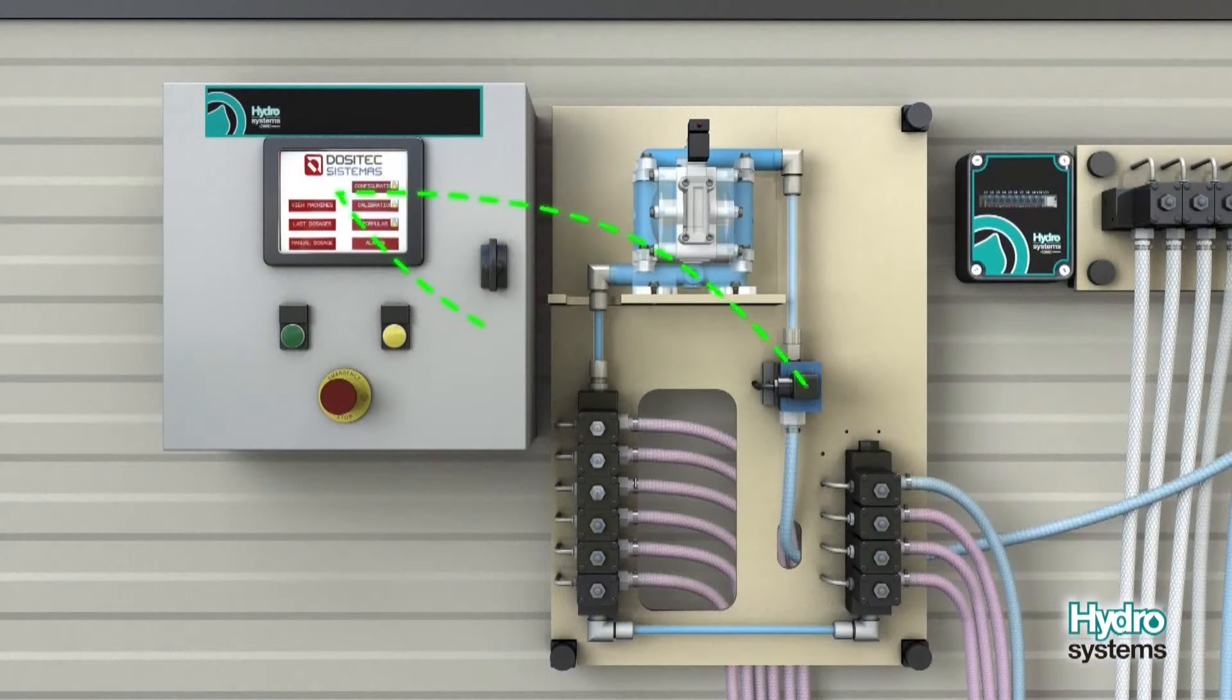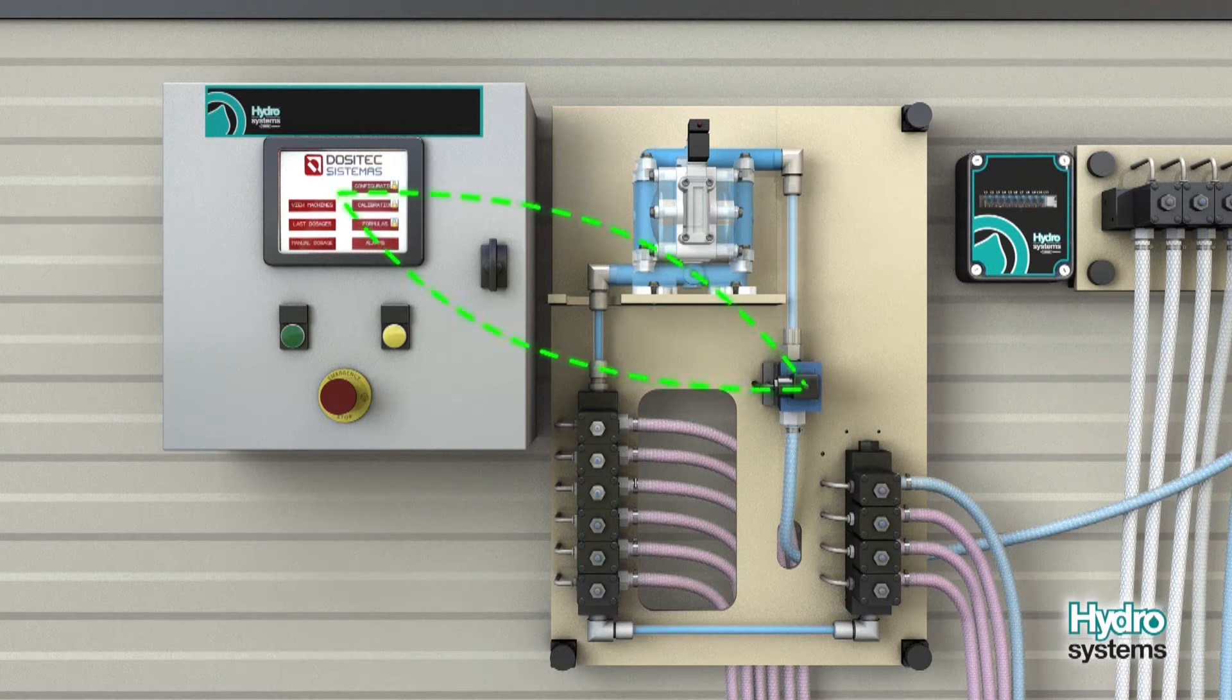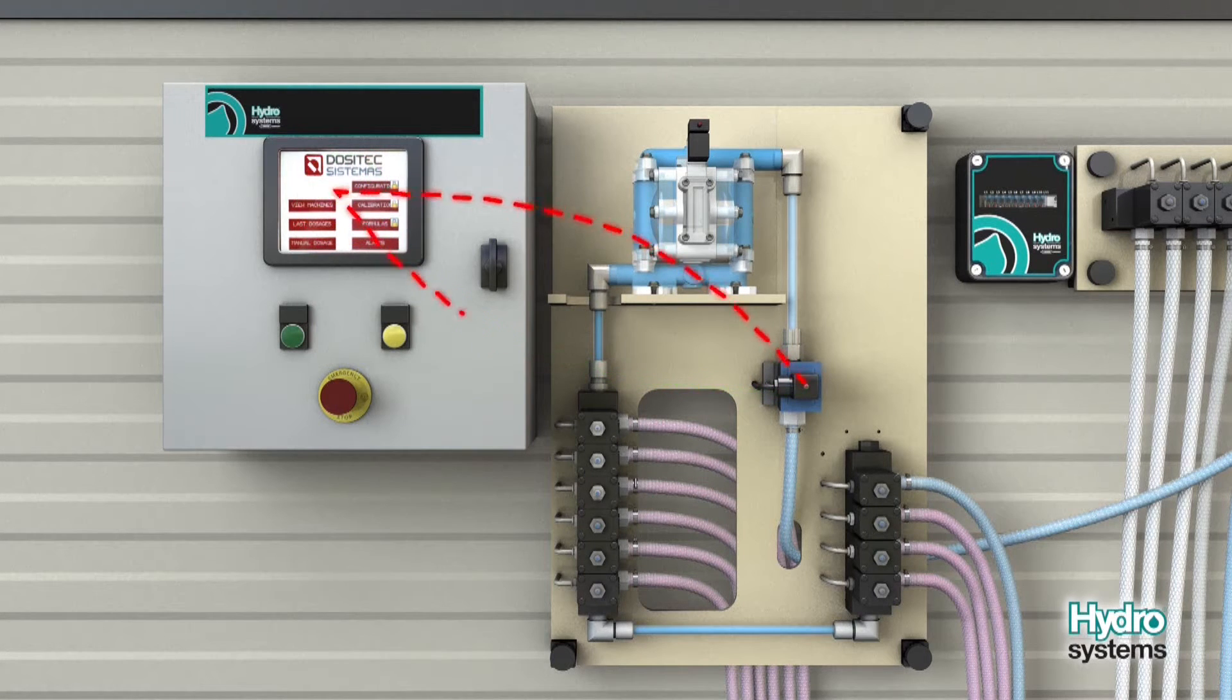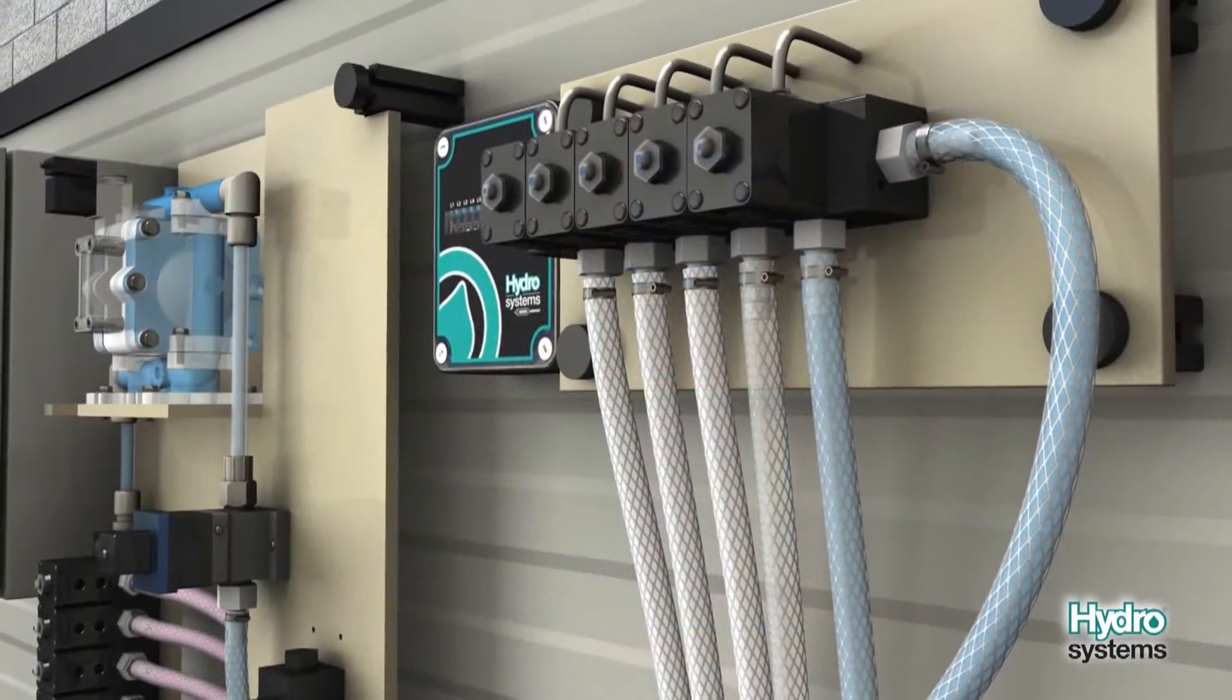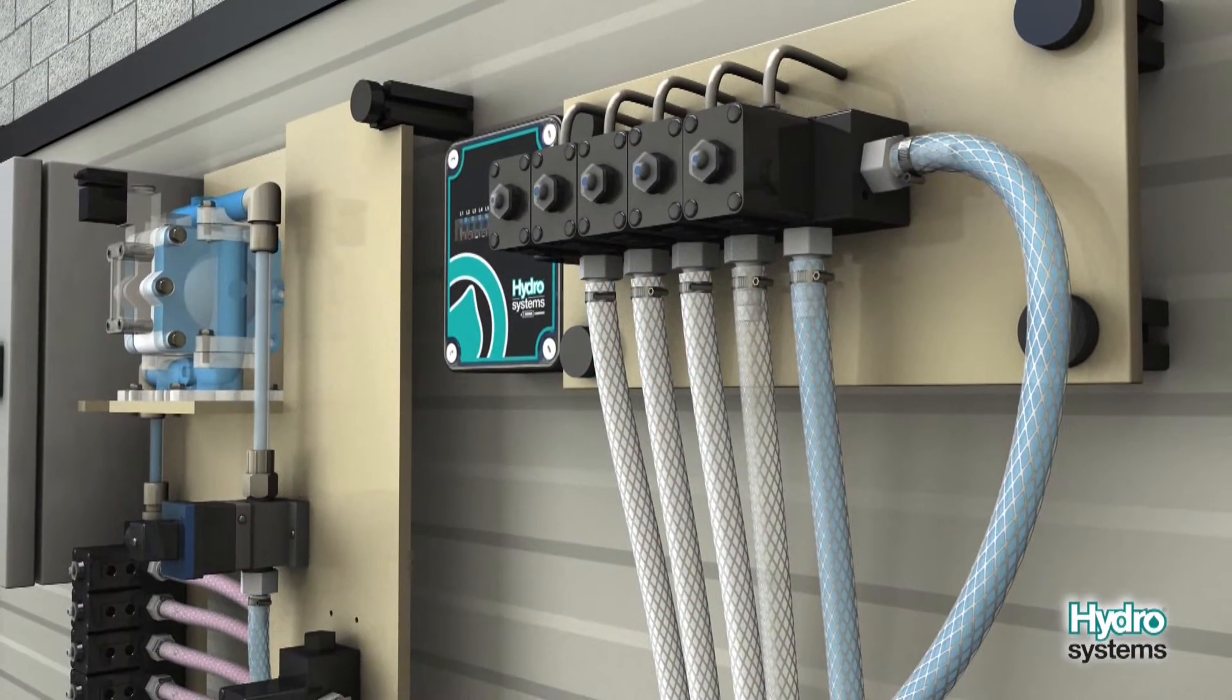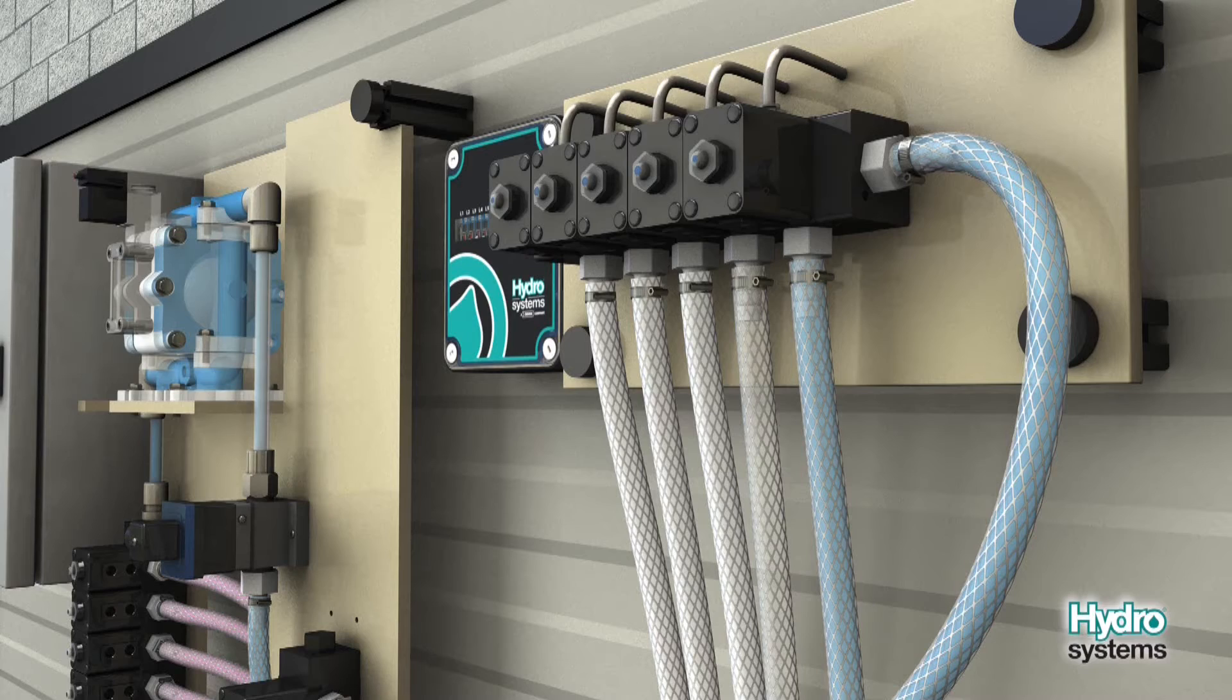If the PLC detects the correct number of pulses from the flow meter, the test is considered passed. If the correct number of pulses are not detected during the test, the test is failed and the dosage is aborted. An alarm is activated. After a successful test, the distributor valve to the washer is opened.